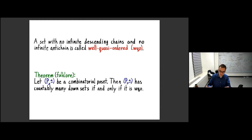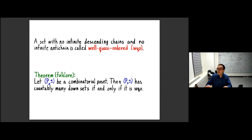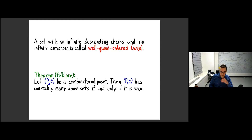If you have a combinatorial poset, there are countably many downsets if and only if the poset is well-quasi-ordered. This is precisely because the minimal obstructions are antichains: if you don't have any infinite antichains, to give any downwards-closed set you only need finitely many elements of P. And if P isn't well-quasi-ordered, you have an infinite antichain, and you can take any subset of this infinite antichain as obstructions to some downset — by Cantor's diagonalization, there are uncountably many subsets of an infinite set, so that would be uncountable. This is an if and only if.